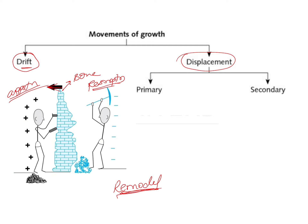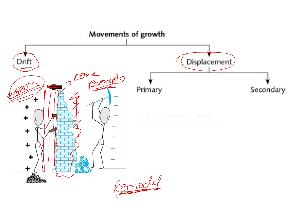As more and more bone is added here and bone is removed from the other side, this ultimately leads the bone to drift from its adjacent position to its new position. The thickness of the bone is determined by the amount of apposition and resorption. If apposition is more than resorption, the bone becomes thicker and moves in the direction of apposition.